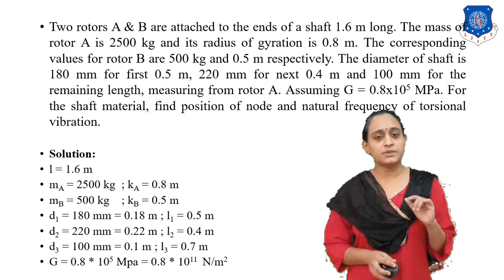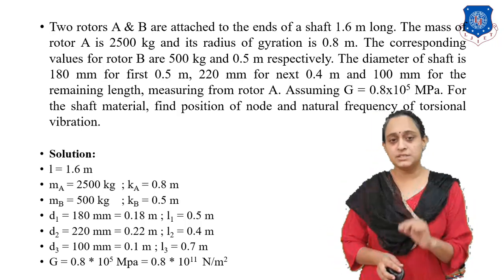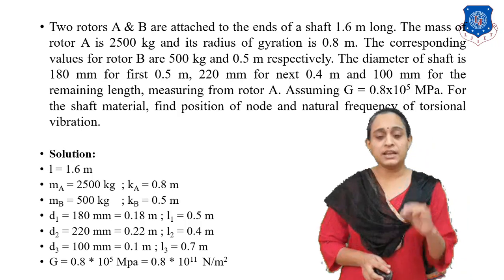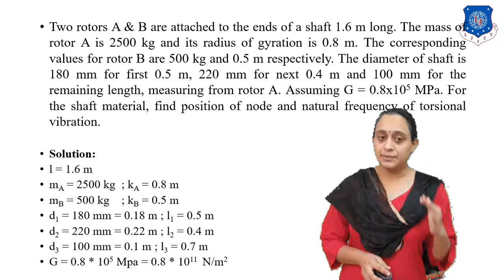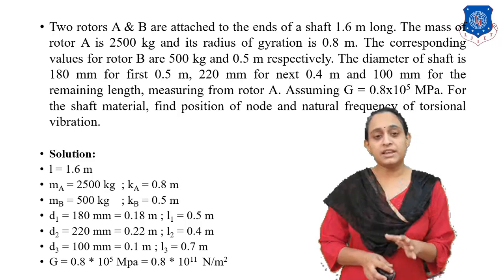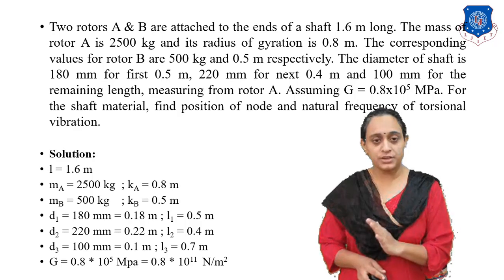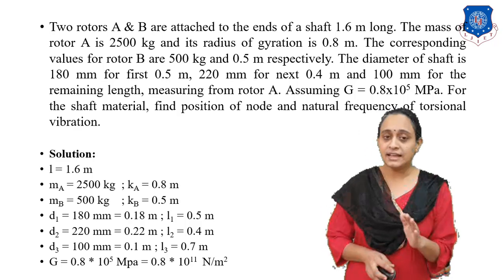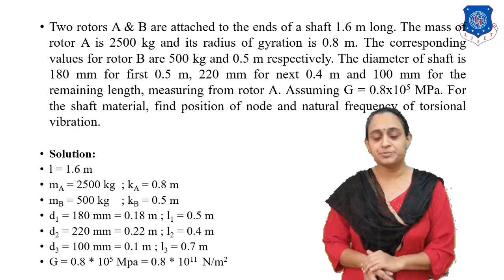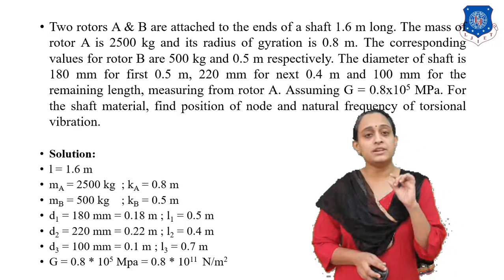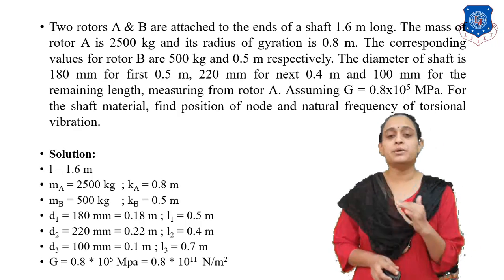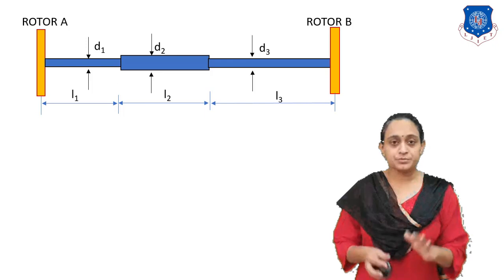Writing down the data: Total length L equals 1.6 m. Mass A equals 2500 kg, radius of gyration equals 0.8 m. Mass B equals 500 kg, radius of gyration equals 0.5 m. D1 equals 0.18 m, D2 equals 0.22 m, D3 equals 0.1 m. Length L1 equals 0.5 m, L2 equals 0.4 m, L3 equals 0.7 m. Modulus of rigidity G equals 0.8 times 10^11 N/m².